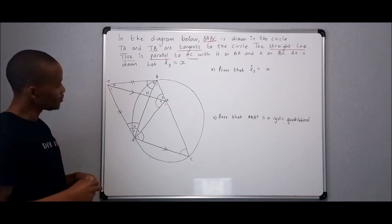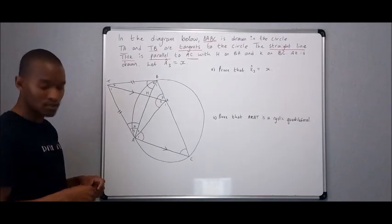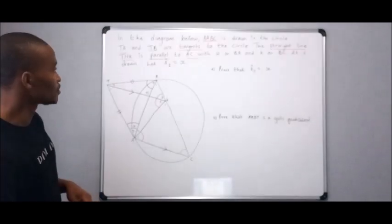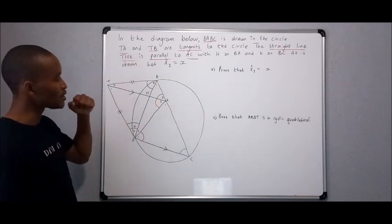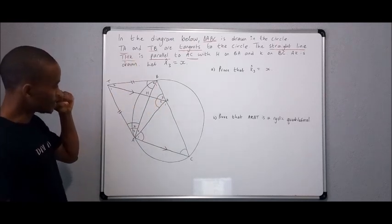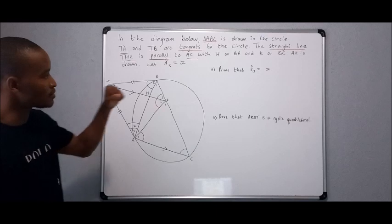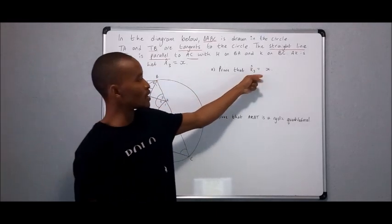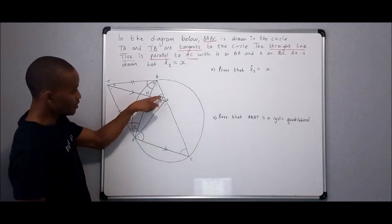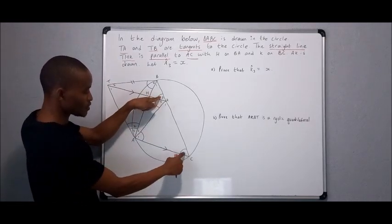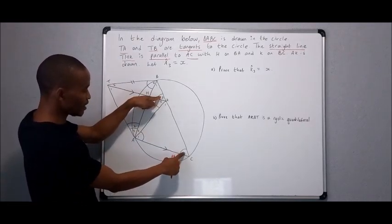There are two tangents TA and TB, there we are. So we know the theorem says these tangents from the same point or a common point are equal, so this is equal to that, creating for us equal base angles, angles opposite equal sides. Meaning angle A3 equal to angle B2. What else can we pick up that is sufficient? We do not make the assumption that there's a center somewhere, nothing in the question is telling us that. Let's start. We get the very first question: prove that angle K3 is equal to x.